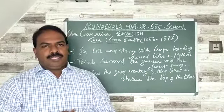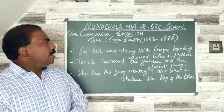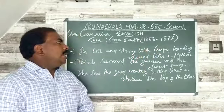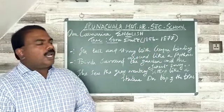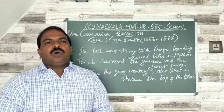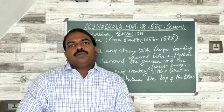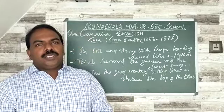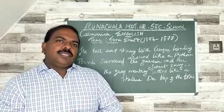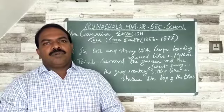Toru Dutt was born in 1856 and she lived up to 1877. She was a Bengali poet. Also, she was the third member in her family.